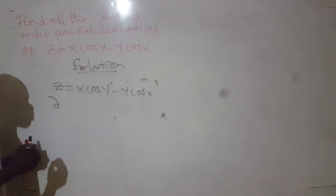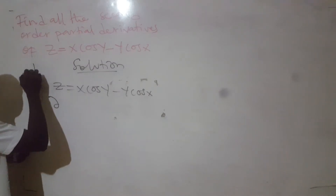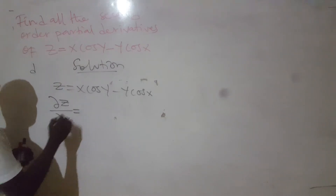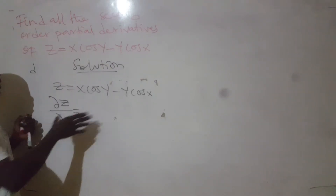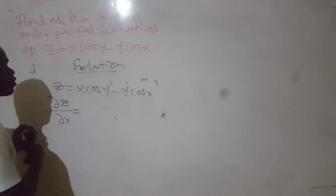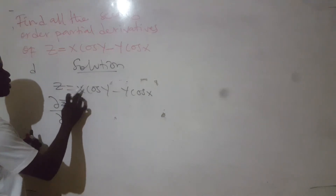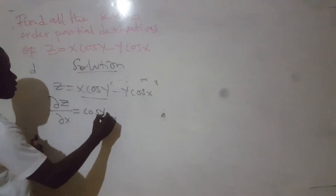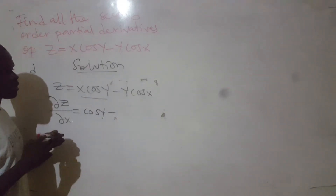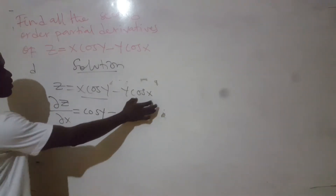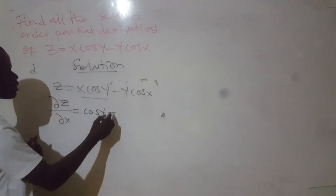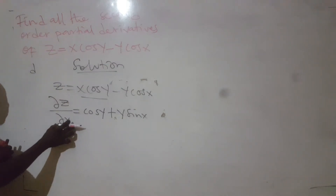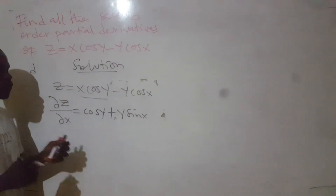So, this is the symbol for partial derivative — we don't use d like this. We differentiate z partially with respect to x. When you are differentiating with respect to x, any other variable which is not x is considered as a constant. So here y is a constant. We differentiate x alone, we get 1. So the answer will be cos y for the differential of this. Minus — when you differentiate cos x, you get negative sin x. So that negative cancels out this negative to be positive y sin x.